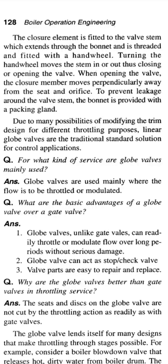Turning the handwheel moves the stem in or out, thus closing or opening the valve. When opening the valve, the closure member moves perpendicularly away from the seat and orifice. To prevent leakage around the valve stem, the bonnet is provided with a packing gland, due to many possibilities of modifying the trim design for different throttling purposes. Linear globe valves are the traditional standard solution for control applications.